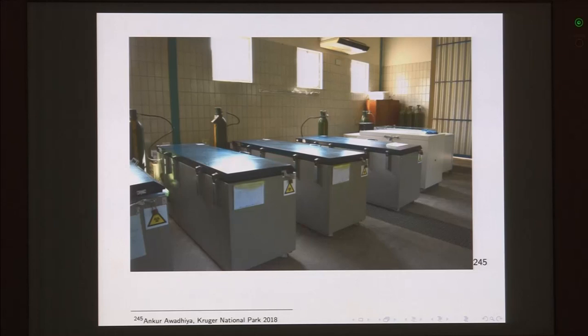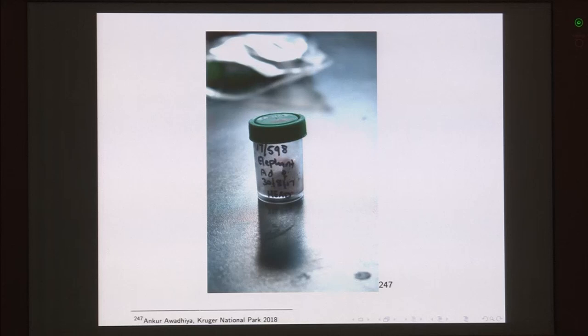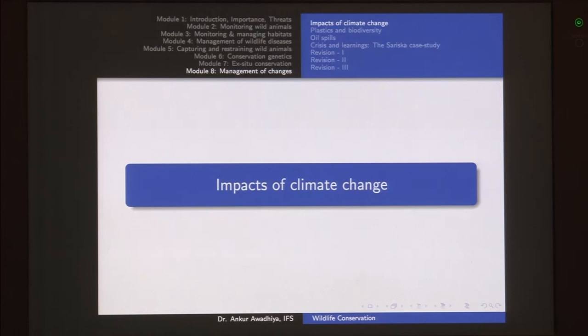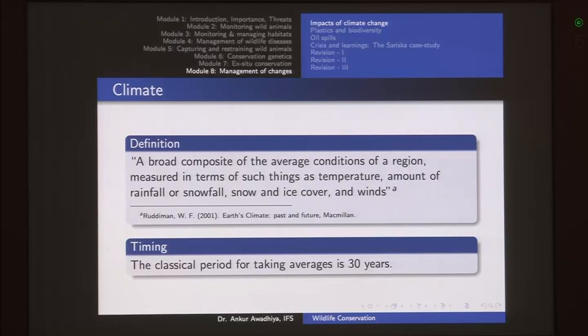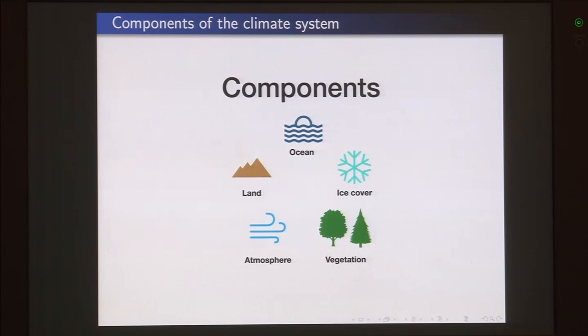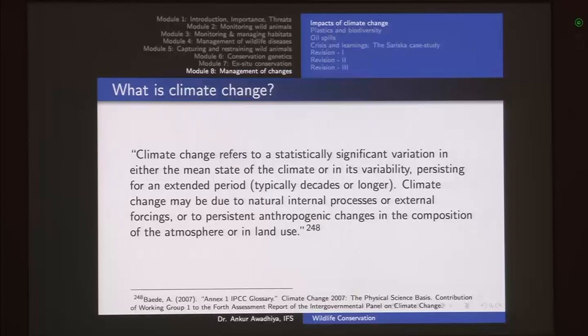In the last module we had a look at management of changes, covering climate change, plastics, oil spills, and the Sariska case study. For climate change, the classical period for taking climate averages is 30 years. Weather refers to conditions at a particular time point; climate is the average drought value over typically 30 years. The five components of climate are: land, ocean, ice cover, vegetation, and atmosphere — these interact to form the climatic system. Climate change is a statistically significant variation in the mean state or variability persisting for an extended period.